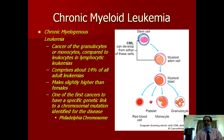CML comprises about 14% of all adult leukemias. The incidence is slightly higher in males compared to females. It was one of the first cancers in which a genetic link was established — the Philadelphia chromosome, which is a mutational chromosome resulting from chromosomal translocation. It was the first cancer in which such a chromosomal mutation was recognized.